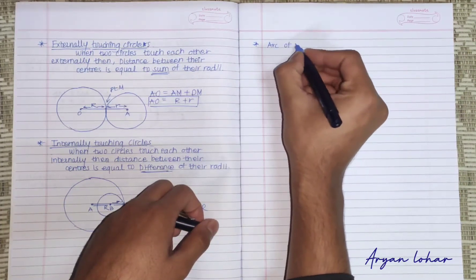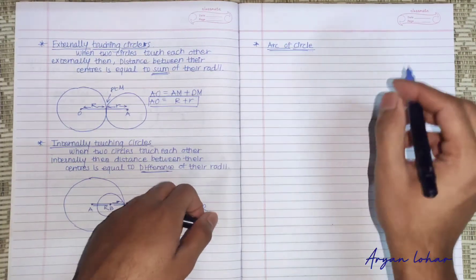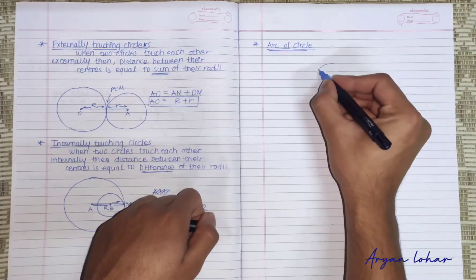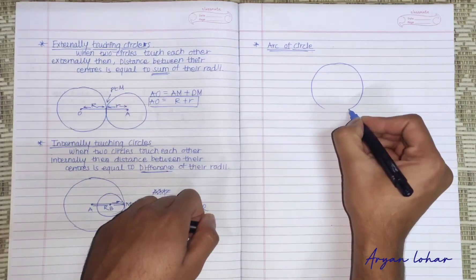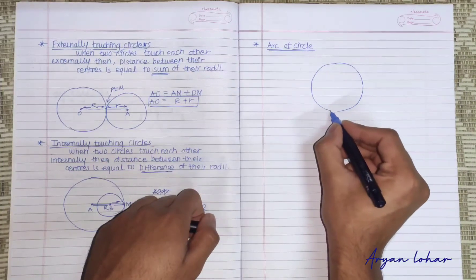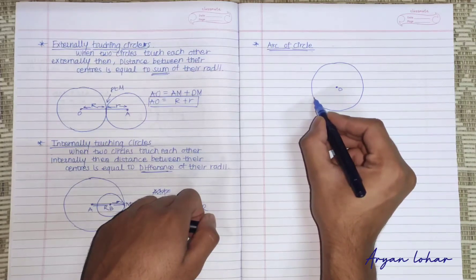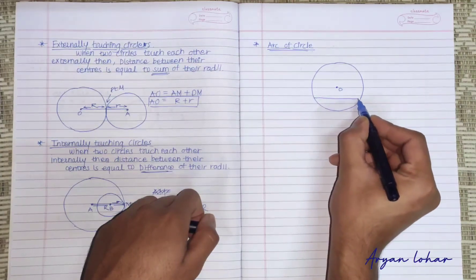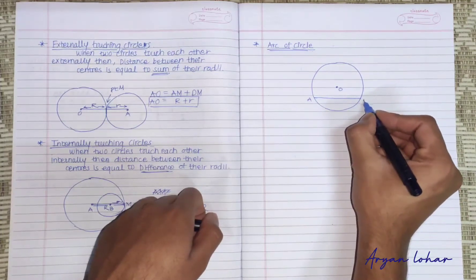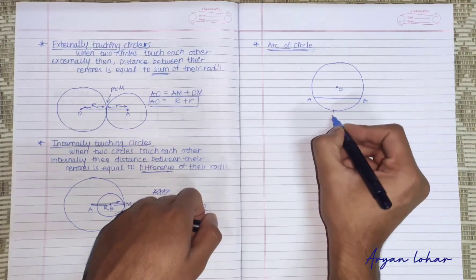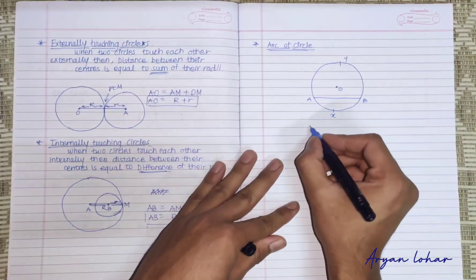Arc of circle. Suppose this is a circle with center O, and here is one chord named as AB, and here is X and here is Y. So in this figure...